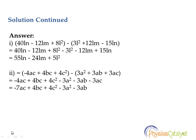The last problem is also a subtraction problem. We need to subtract 3a²+3ab+3ac from -4ac+4bc+4c². Opening the bracket changes the sign: -4ac+4bc+4c²-3a²-3ab-3ac.